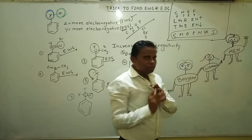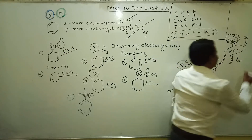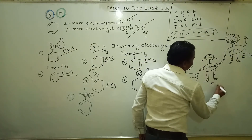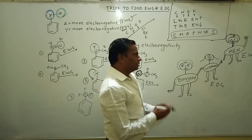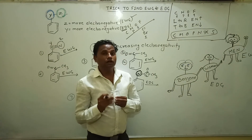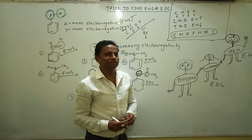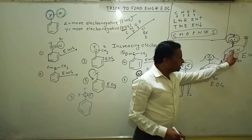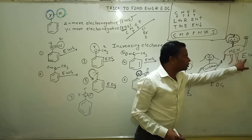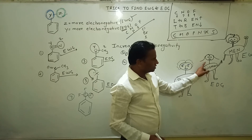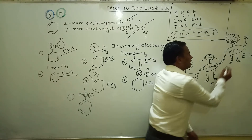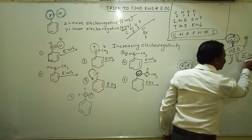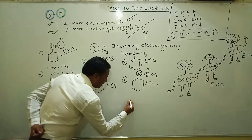Simply remember: think of benzene as a woman and the attached group as a man. If the man — meaning Z, the farther atom — is more electronegative, it is an electron withdrawing group. If the woman — meaning Y, the closer atom — is more electronegative, it is an electron donating group. This is a very important concept for electrophilic substitution reactions.